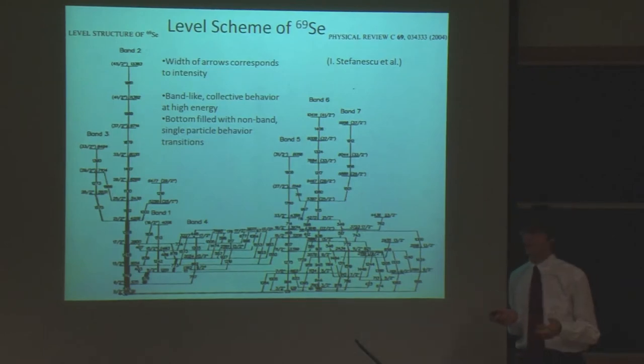So Selenium-69 is the next lightest isotope of Selenium-71 that has an odd number of neutrons. And we can see it shows a lot of single particle behavior, which is characterized by irregular changes in energy and lots and lots of different energy levels. But we can see some collective behavior, which is these band structures that always have a change in angular momentum of 2.